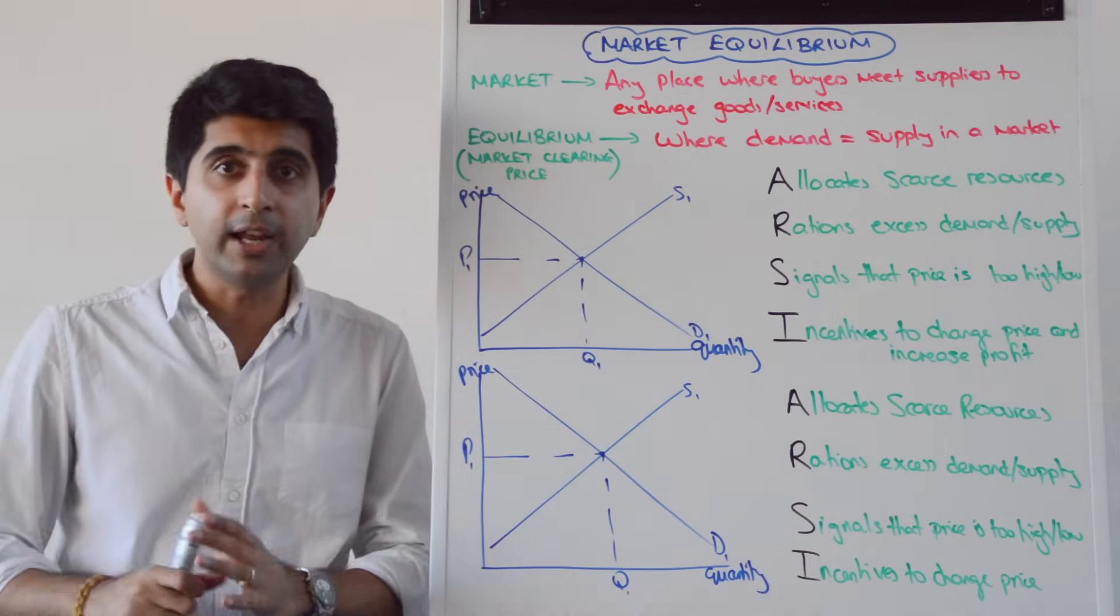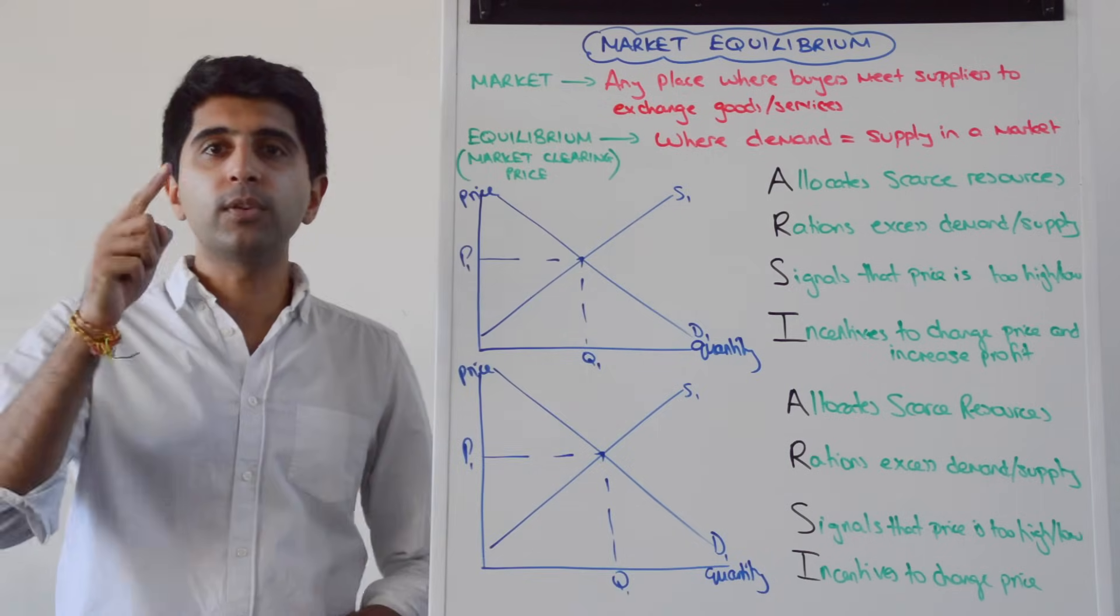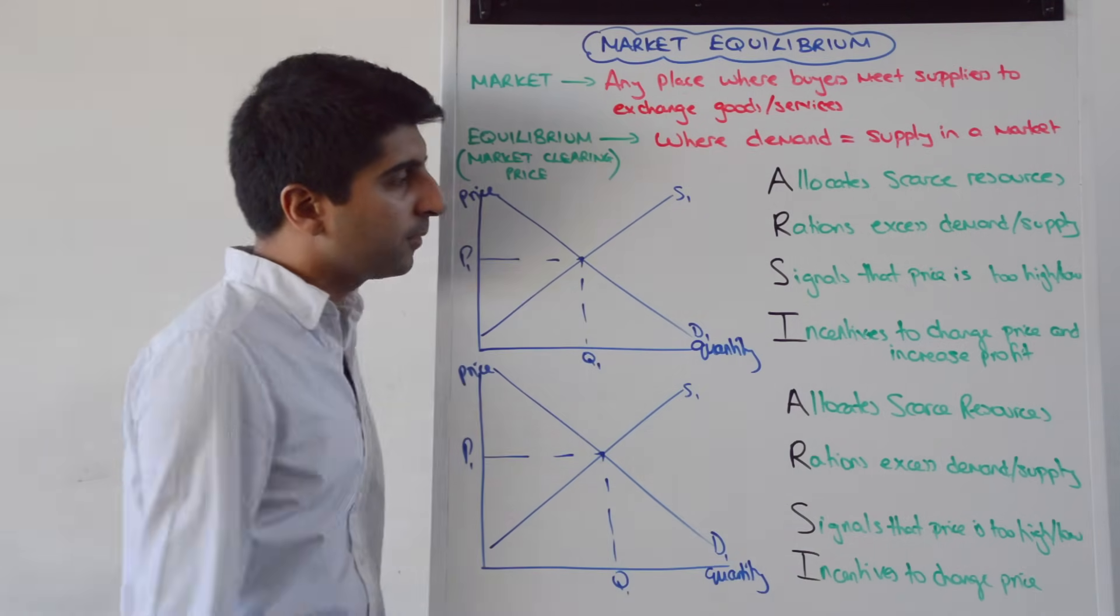Equilibrium is just the Greek word for balance. So apply that to a market, it occurs where demand equals supply in a market. Where demand equals supply.